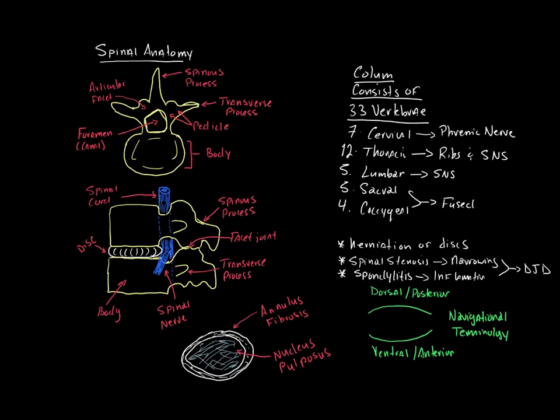As I showed you on the skeleton, each vertebra that is unfused — the fused vertebrae are going to be a little different — but unfused vertebrae, so the cervical, thoracic, and lumbar vertebrae, have the same general kinds of morphology. You have the large, thick bony prominence known as the body.